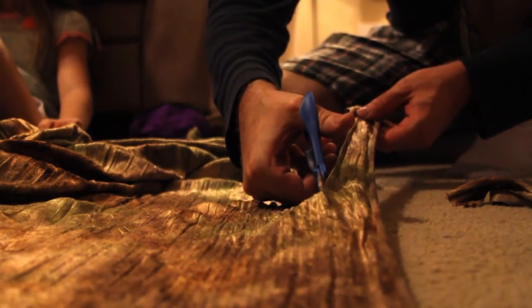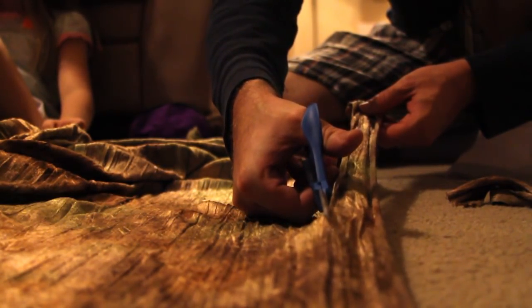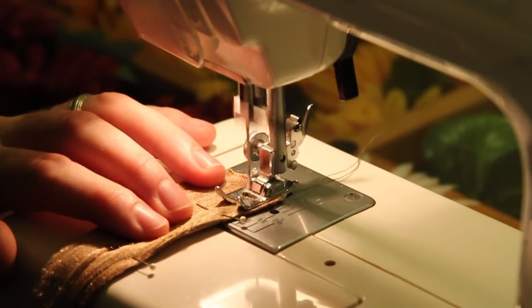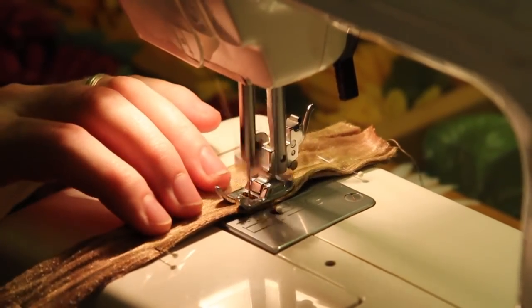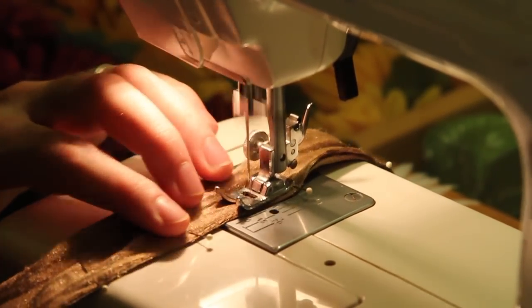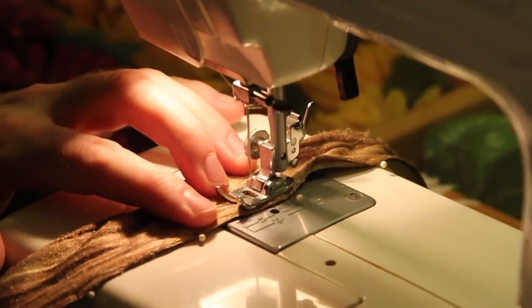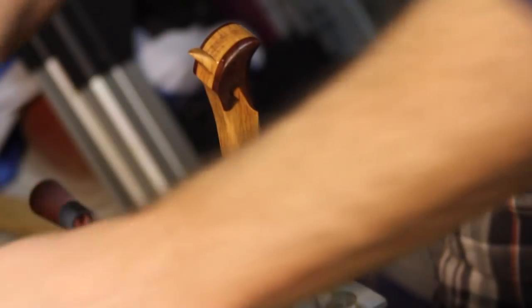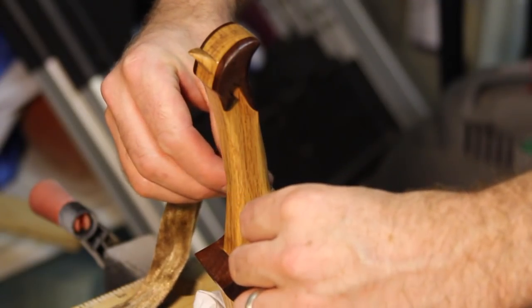I had some fabric from an old Renaissance Festival costume, so I cut a strip out, folded it in half and a half, and ran a seam down one side. I turned it right side out, which gave me a nice length of fabric to wrap the handle.